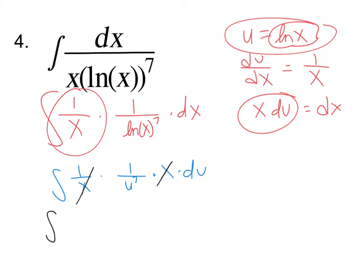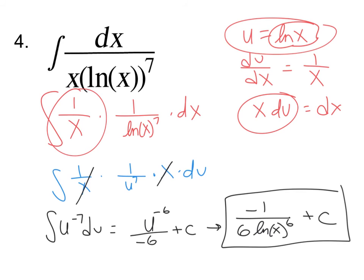I'm going to write this as u to the negative 7 because it's easier in my brain. Some of you might be good at doing it 1 over u to the 7th. What's the anti-derivative? But I like rewriting it. I can do the derivative, but the anti-derivative I find harder. So I add 1, negative 6, divided by negative 6 plus c. So then we get negative 1 over 6 ln of x to the 6th plus c. And that's my final answer.